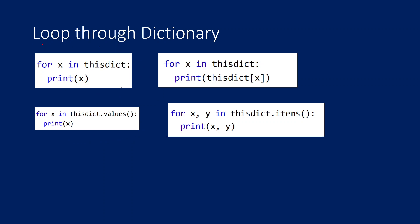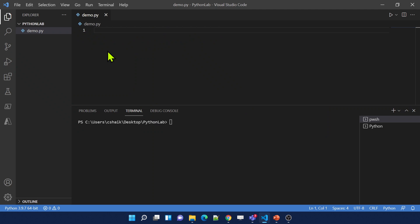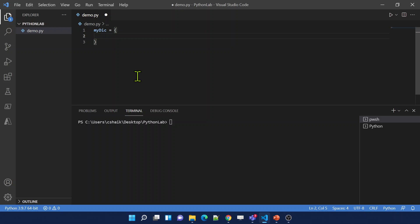First, let's discuss how to loop through a dictionary. We can use a for loop and either use the dictionary name directly, or use the values, items, or keys functions. Let me go to Visual Studio Code and show you practically. Let's create a dictionary called MyDictionary with a key called ID with value 1, and another key called name with value Mahir.